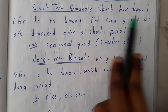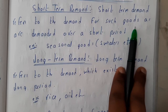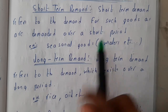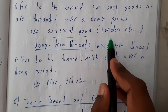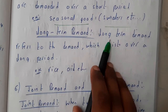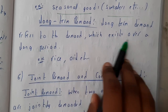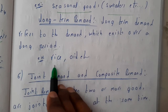Short-term demand refers to the demand for goods that exists only for a short time, such as seasonal goods like sweaters. Long-term demand refers to the demand which exists over a long period, such as rice and oil.